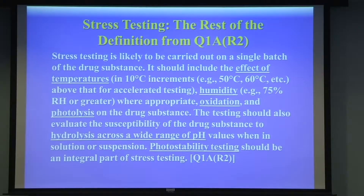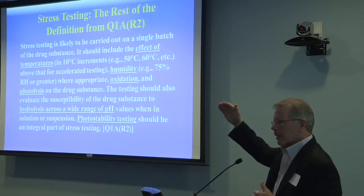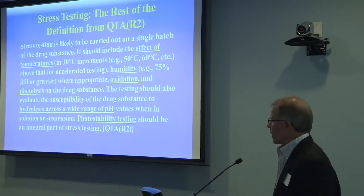Another definition with more detail is also contained in Q1A when it talks about specific conditions: humidity, oxidation, photolysis, photo stability, and the effect of temperatures in 10-degree increments. I don't know many people who do 10-degree increments — typically they do a high temperature that's above accelerated stress. Occasionally you can do 10-degree increments and try to develop some Arrhenius relationships, but I'm not going to talk too much about that today.